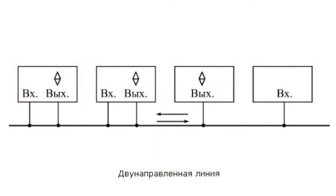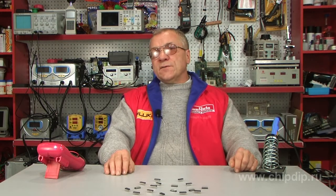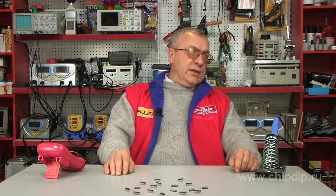Bidirectional lines are those in which signals can travel in two opposite directions, in contrast to unidirectional, one-way lines that go from one output to one or several inputs. Bidirectional lines enable connection of multiple outputs and multiple inputs. It is clear that bidirectional lines can be built only on the basis of open collector or tri-state outputs, and almost all buffers have exactly these outputs.